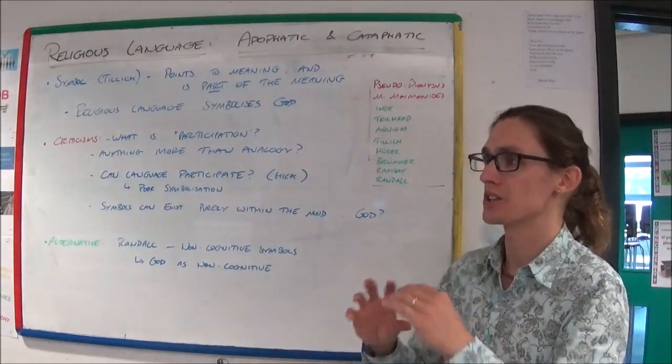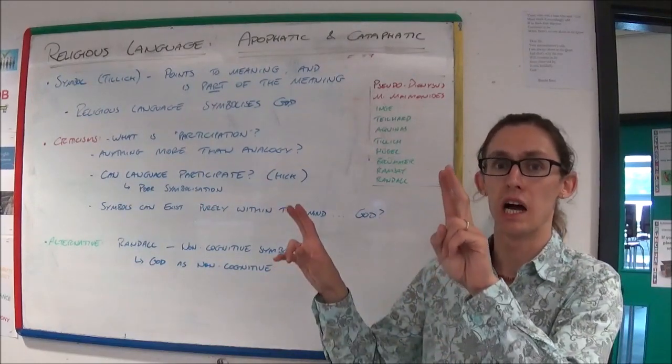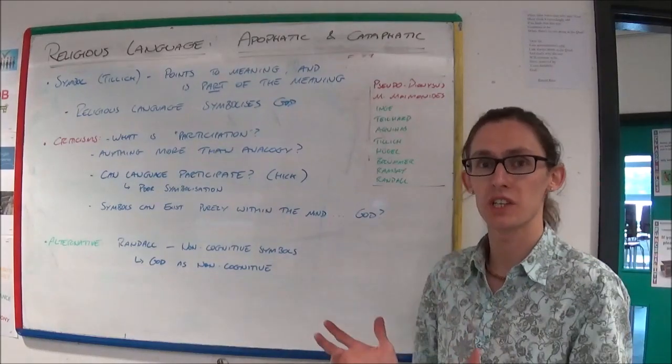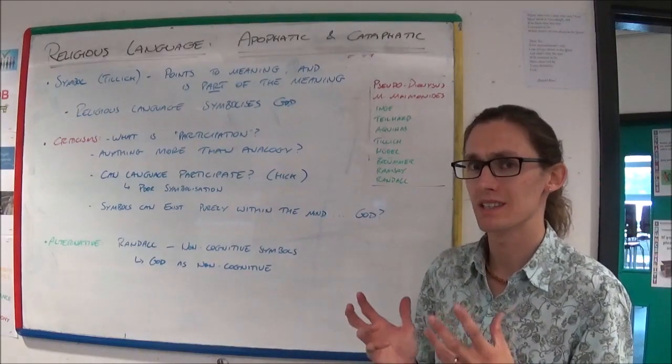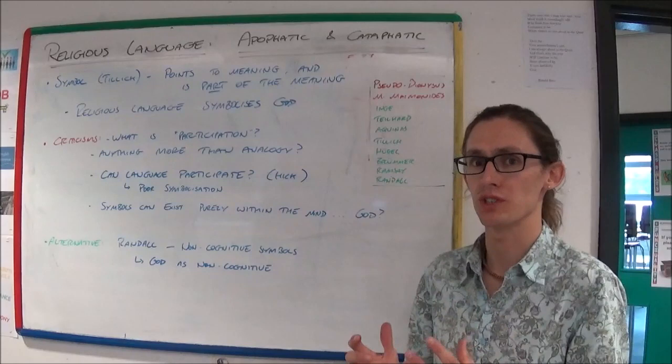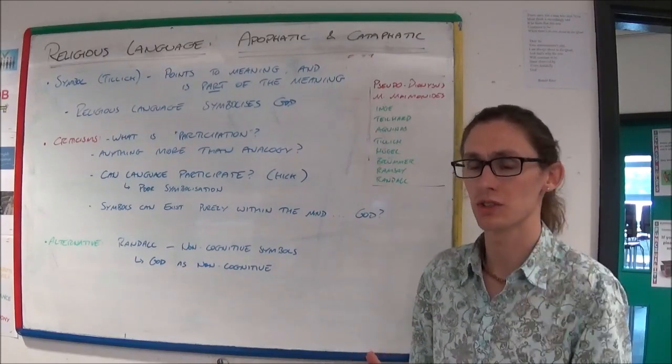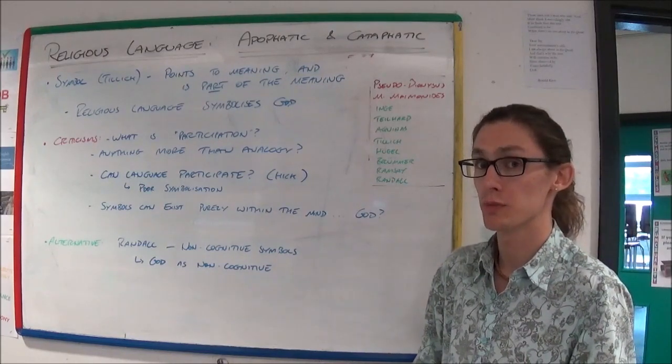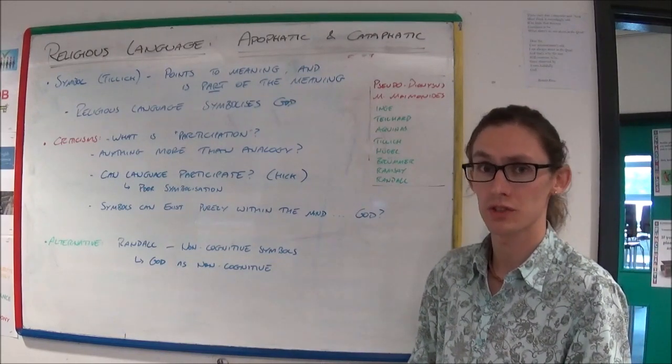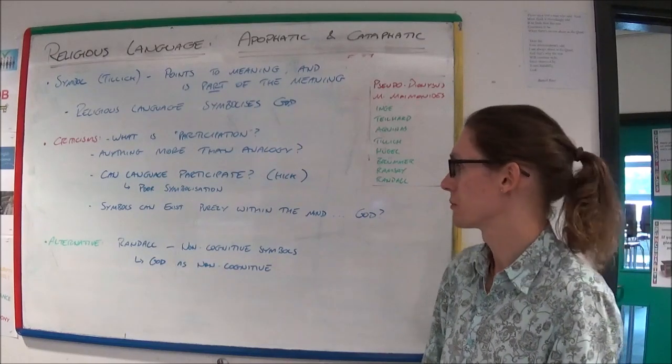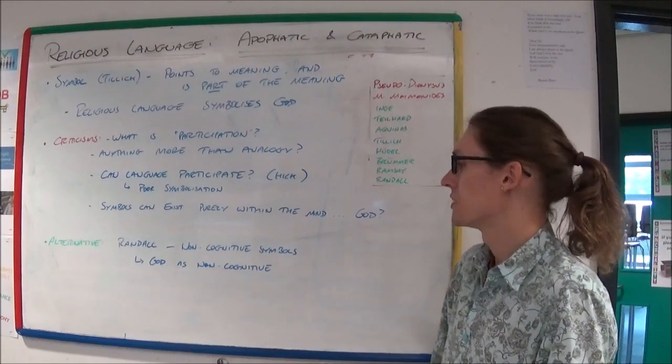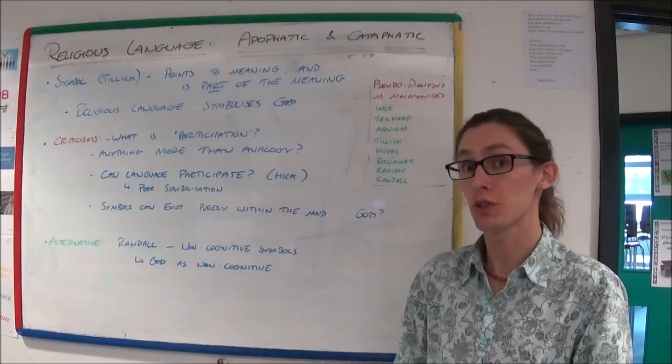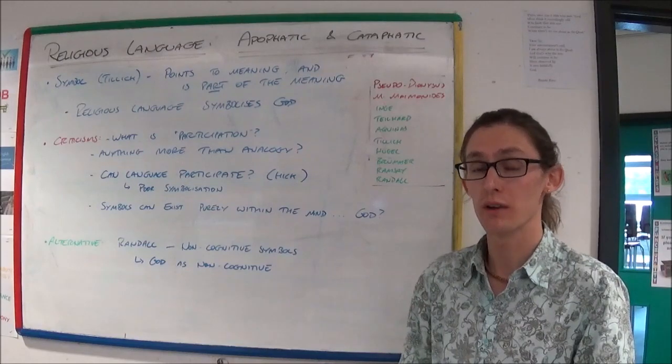Yet the Confederate flag still represents this, quote unquote, ideal idea of Southern States of America. But it doesn't exist. It never exists. It only exists in the minds of the people who fly that flag. So does that mean that God could potentially not exist, based on this idea of symbology? This is a problem. Tillich unwittingly seems to be suggesting that God could not exist, or only exist in the mind.